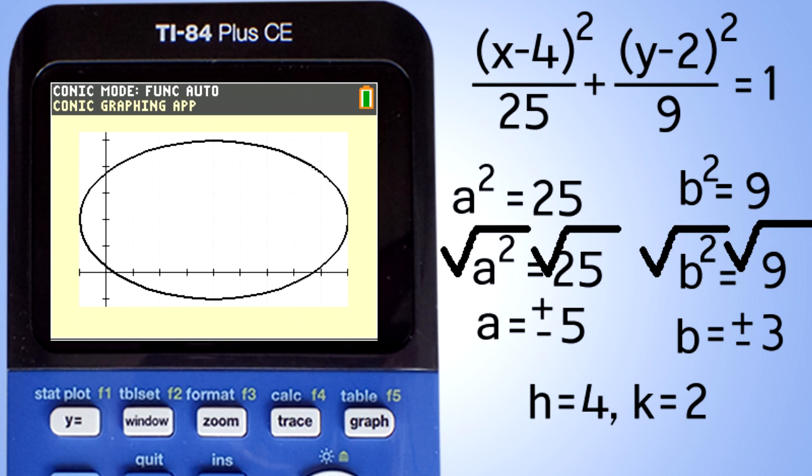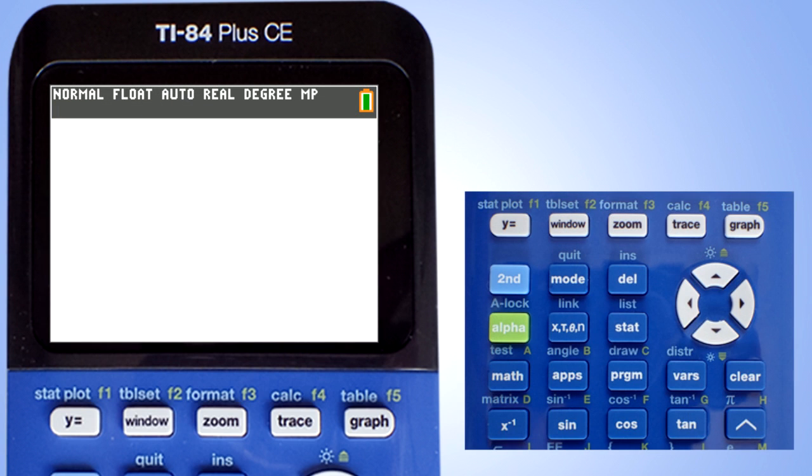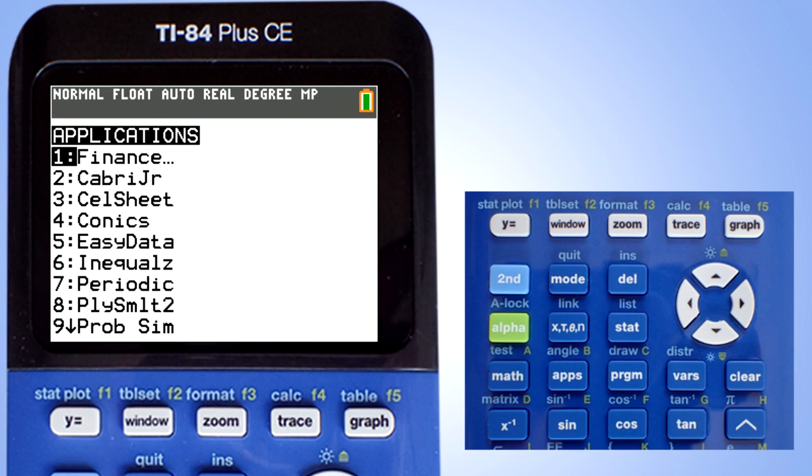To graph an ellipse on the TI-84 Plus CE, we are going to use the Conics app that is built into the calculator. To open the Conics app, press the apps button here. The applications list opens up, go down to number 4, Conics, and press enter.